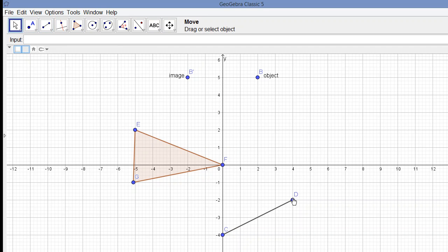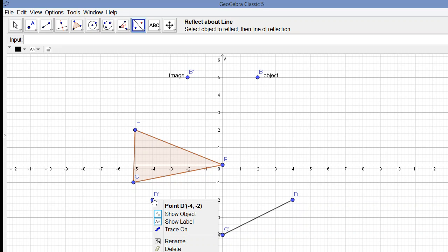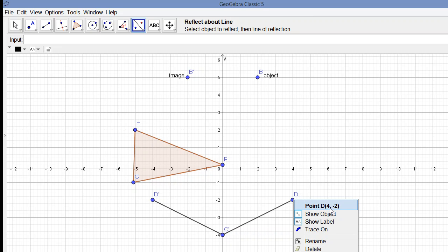Let's look at the line segment DC. We are reflecting it in the y-axis, and we see D prime C prime over here. If we look at the coordinates of D prime, it's (-4,-2). Coordinates of D are (4,-2). So we see that the first number, the x-coordinate, has changed its sign.